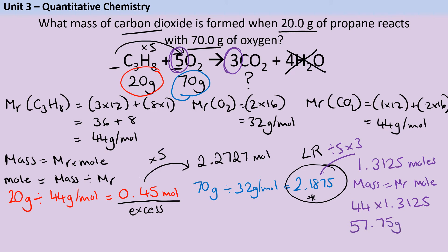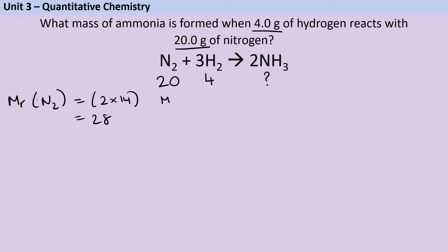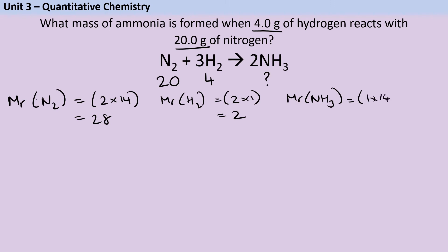Because in the question they've given values to three significant figures, I'll round to three significant figures as well. For this next question, I don't have an additional product to confuse me, but I'll still write the masses underneath the correct species. Then I can work out the relative formula mass for each one: for nitrogen (N₂), two lots of 14 gives 28; for hydrogen (H₂), two lots of 1 gives 2; and for ammonia (NH₃), one lot of 14 plus three lots of 1 gives 17 grams per mole.